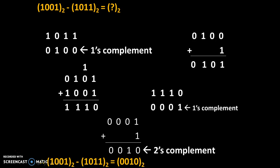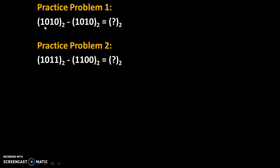Therefore, 1001 base 2 minus 1011 base 2 is equal to negative 0010 base 2. This answer is negative. Here are a few practice problems — try to solve these problems and give your answers in the comments. Thank you.